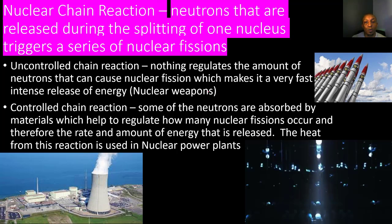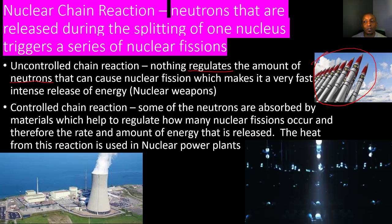This uncontrolled chain reaction is what we use in nuclear weapons. To regulate something means to slow down or control the flow of something. In an uncontrolled chain reaction there is nothing to regulate or slow down the release of neutrons — and remember, these neutrons hit other atoms and cause large amounts of energy to be released. Since it's uncontrolled, nothing is slowing it down, which is why it's used in nuclear weapons and can cause large amounts of destruction.